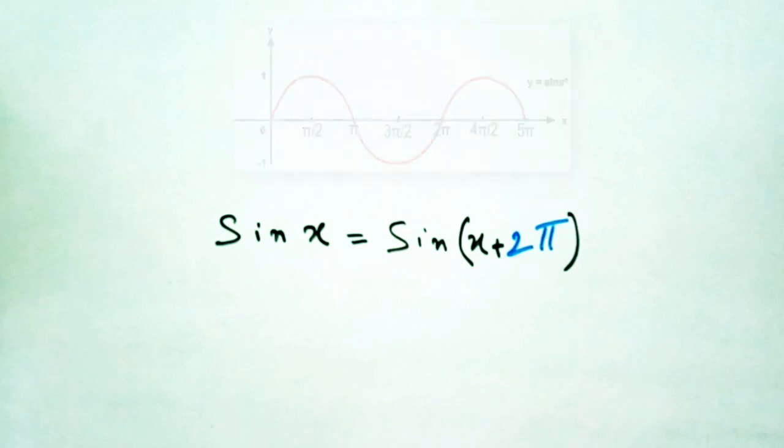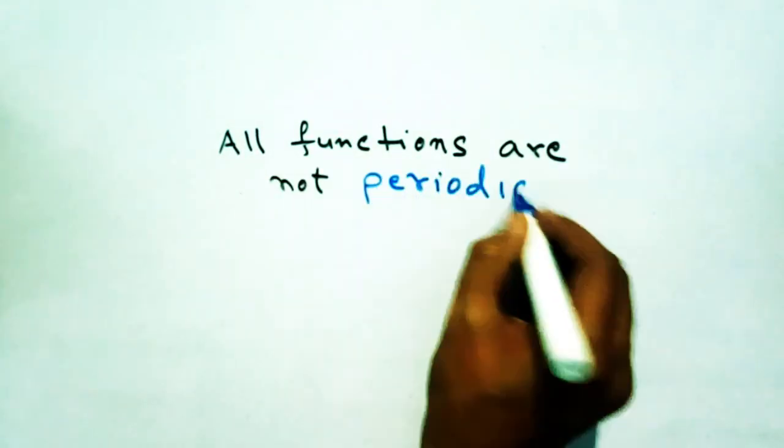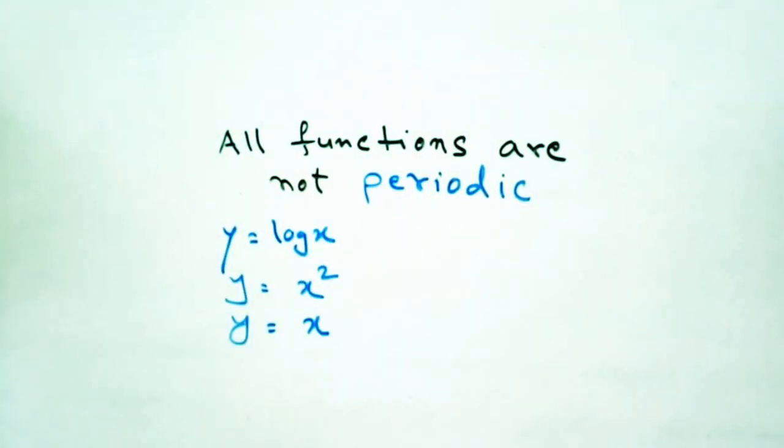Mathematically, we can write a periodic function as f(x) = f(x + T) where T is the period of the function. Also, we should note that not all functions are periodic, like f(x) = log x, f(x) = x², f(x) = x, and some other functions.